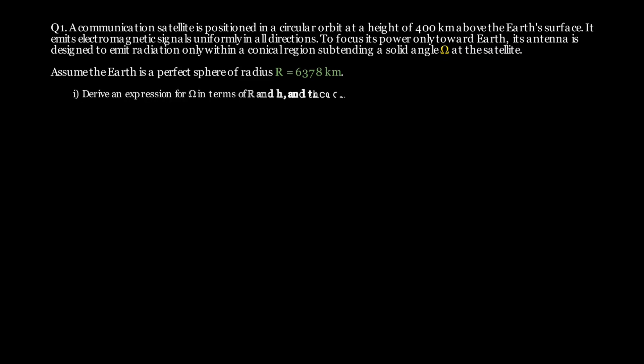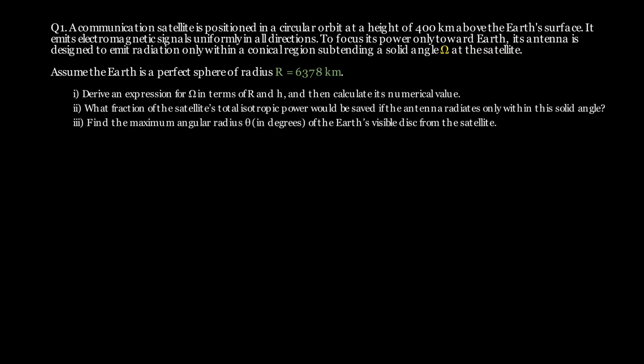In part 1, we are asked to derive an expression for the solid angle in terms of r and h and then compute its value numerically. In part 2, we'll determine what fraction of total isotropic power is saved by restricting radiation to this solid angle. And, finally, in part 3, we compute the angular radius of the Earth's visible disk as seen from the satellite.